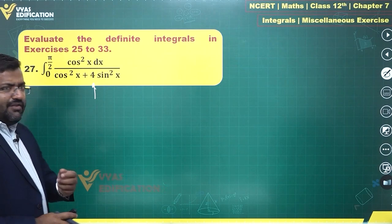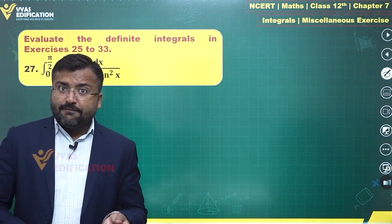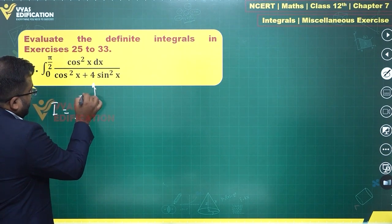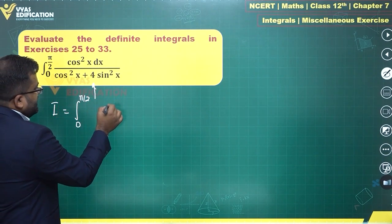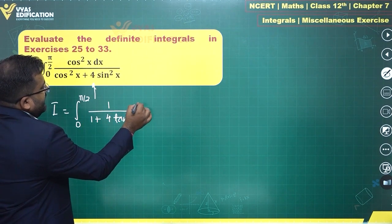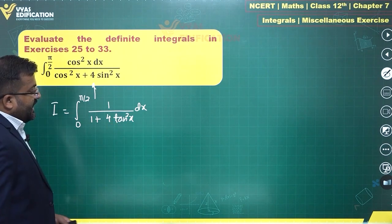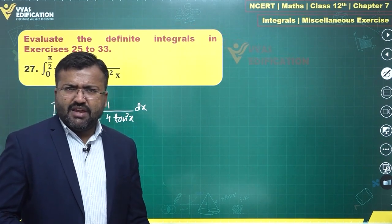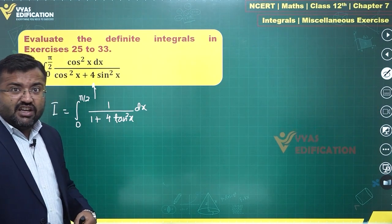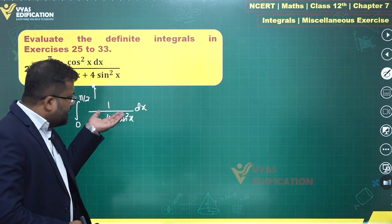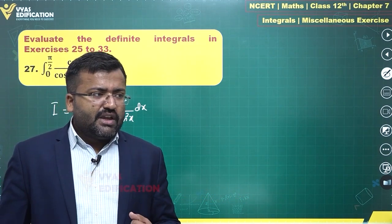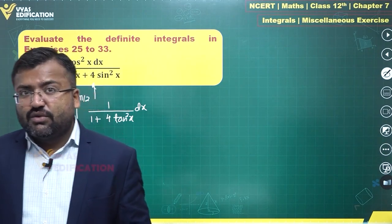Imagine in the previous question we divided by cos, right? We can divide by cos over here also. So I equals integral 0 to π/2, dividing by cos this becomes 1/(1+4tan²x) dx. Now can I make a simple substitution? I want to substitute tan x as t. What is the derivative of tan x? Is it there in the numerator? No, there is no derivative, but derivative of tan x is sec²x.